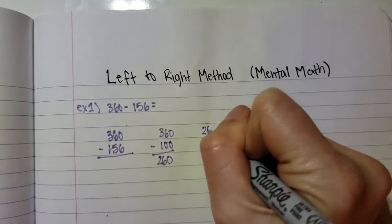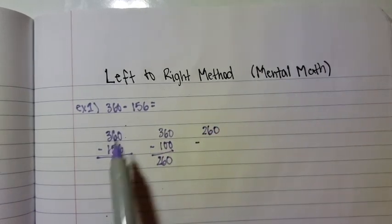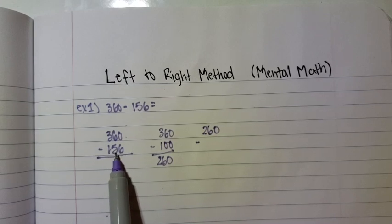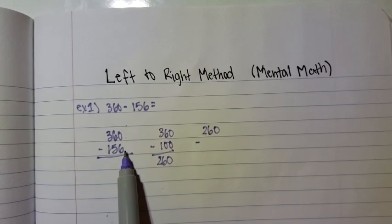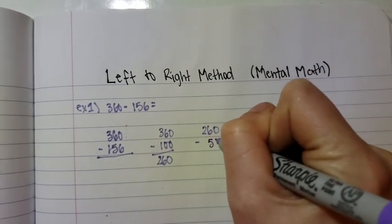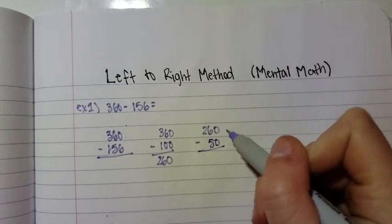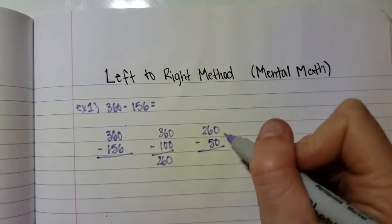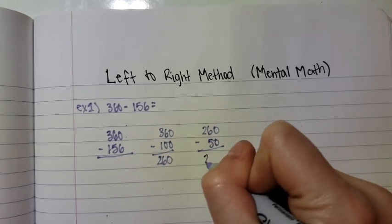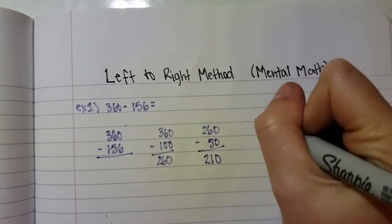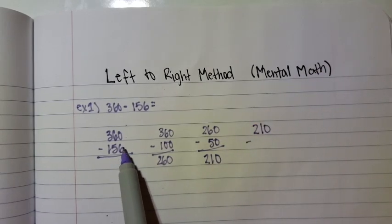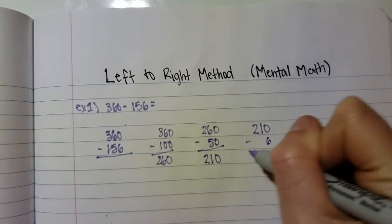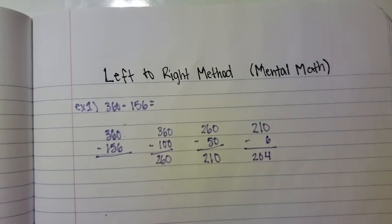Now, you're going to take your 260 and then come back over to the next number in line. Because you already got rid of the hundreds, you're going to go over to the tens place, which is 50. So then you're going to subtract 50 from 260. 260 minus 50 equals 210, and then you're going to take 210 and subtract your last number, which is your 6 from it, making it be 204.